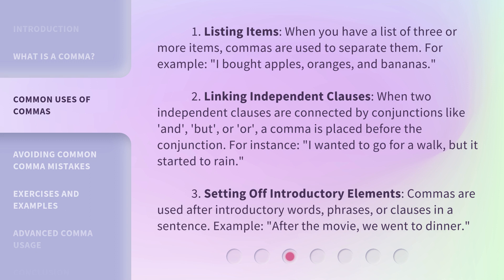Rule 2: Linking Independent Clauses. When two independent clauses are connected by conjunctions like and, but, or or, a comma is placed before the conjunction. For instance: I wanted to go for a walk, but it started to rain.